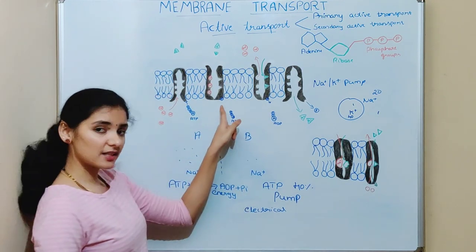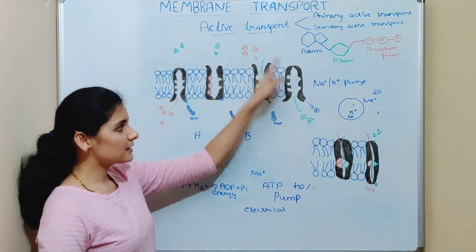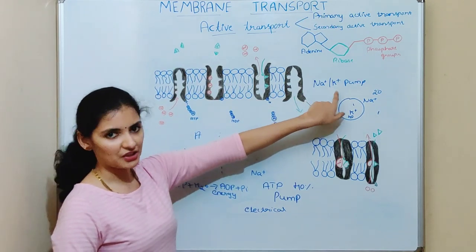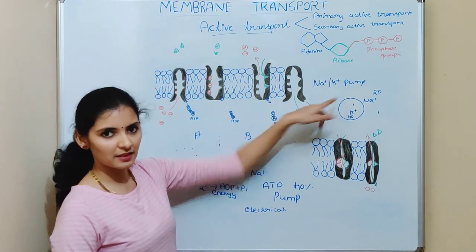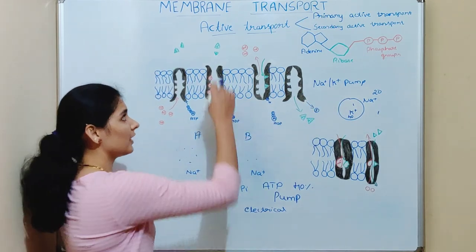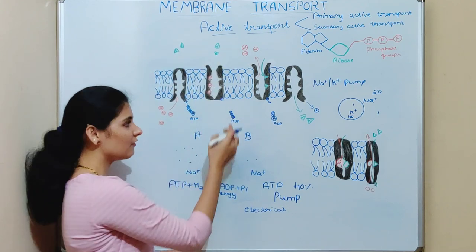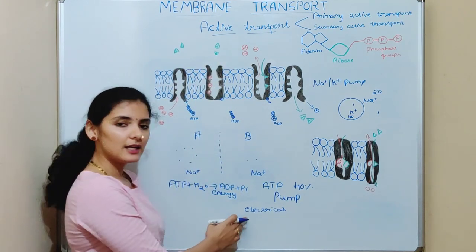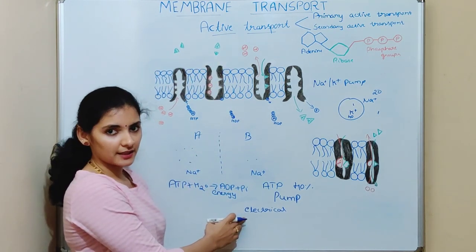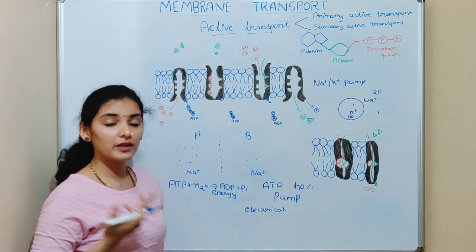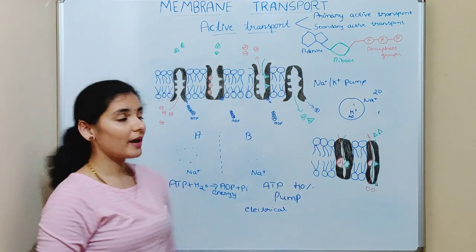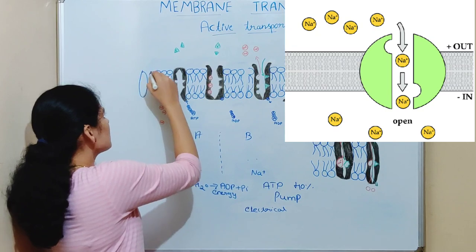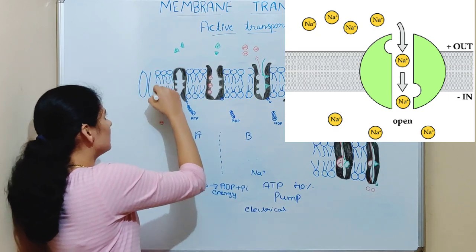For example, there exists an electrical gradient due to the sodium-potassium pump. The sodium ion concentration is more outside the cell compared to inside — this is the sodium gradient. Imagine a sodium channel here.